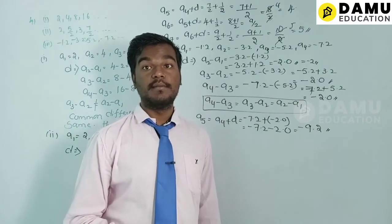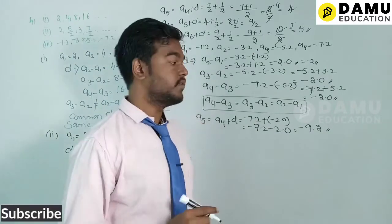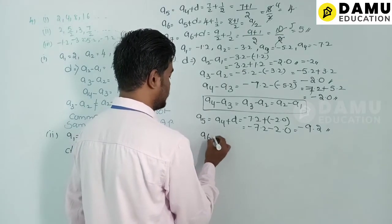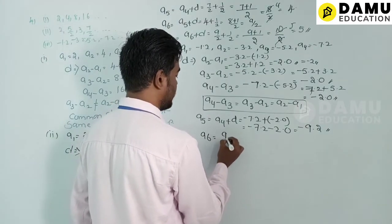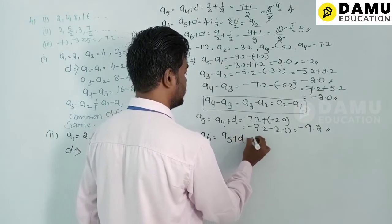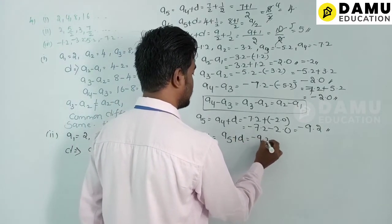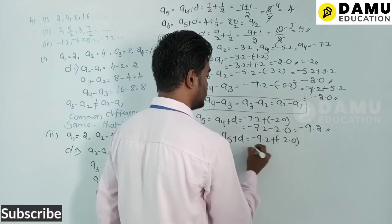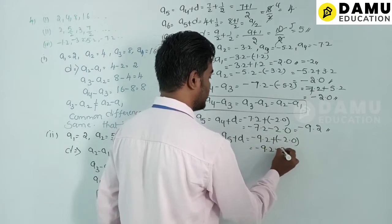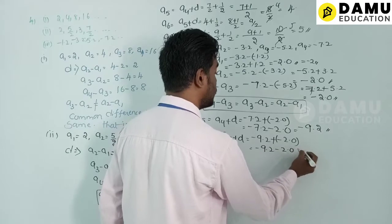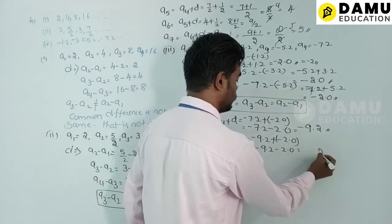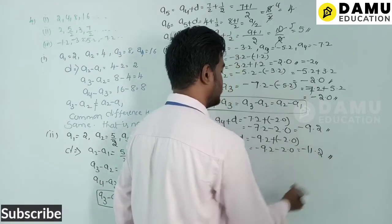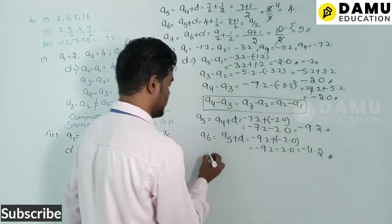Then a6 = a5 + d = −9.2 + (−2.0) = −9.2 − 2.0 = −11.2.